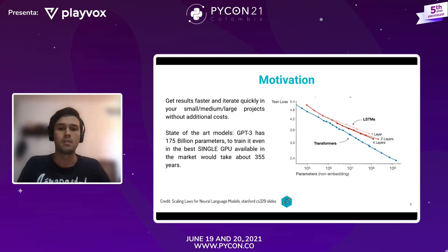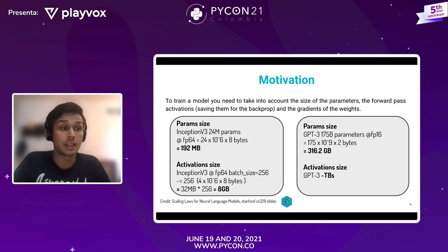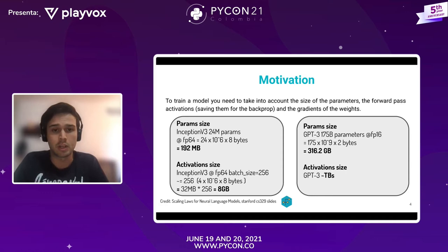Para entrenar un modelo hay que tener en cuenta varias cosas con respecto a la memoria. La primera es el tamaño de los parámetros que van a estar en memoria. Además, hay que tener en cuenta las activaciones que genera el Forward Pass del modelo, porque estas activaciones las tiene que guardar para cuando haga backpropagation.